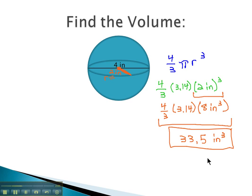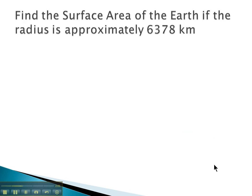Let's do one more example. Here, we're asked to find the surface area of the Earth, given that the radius is approximately 6,378 kilometers.